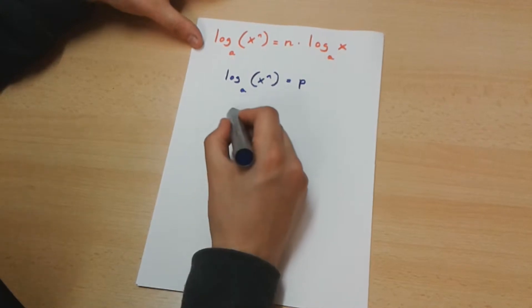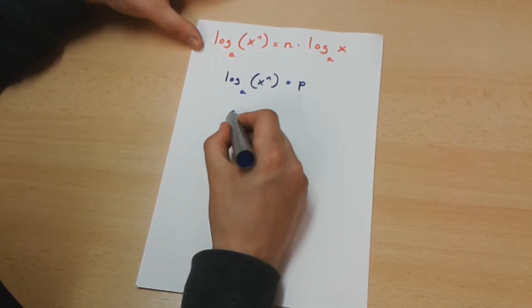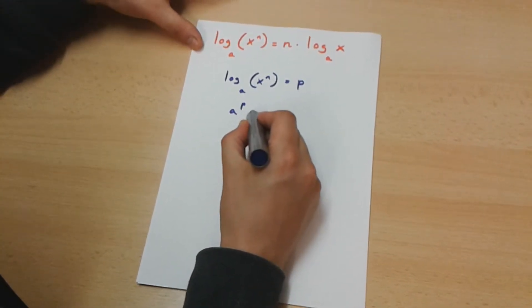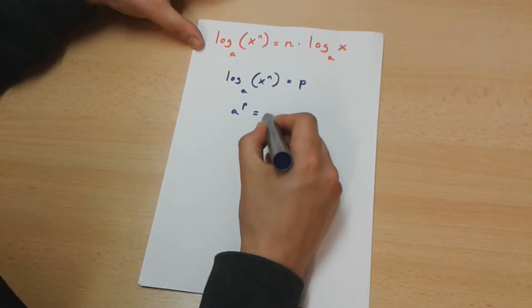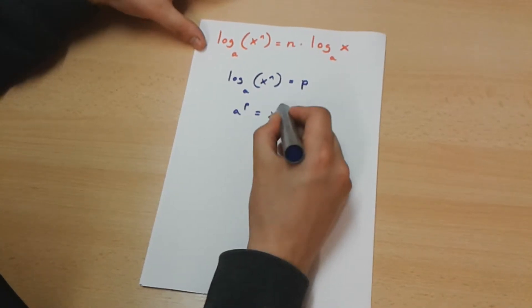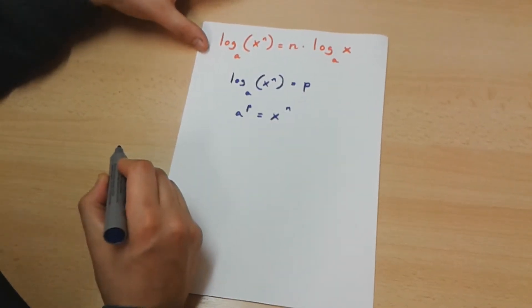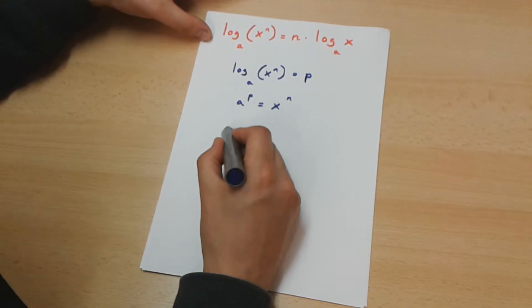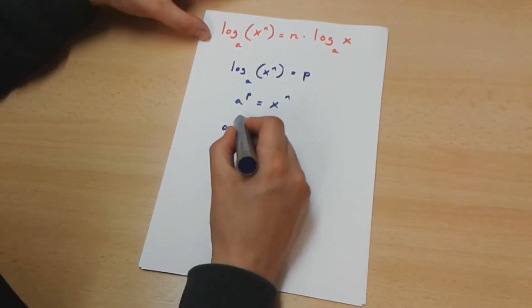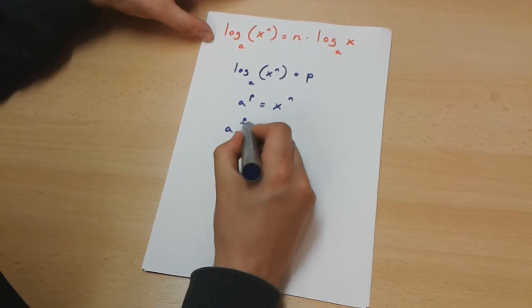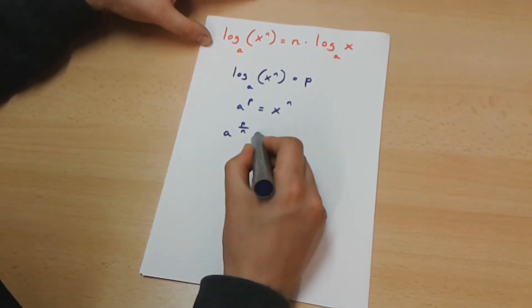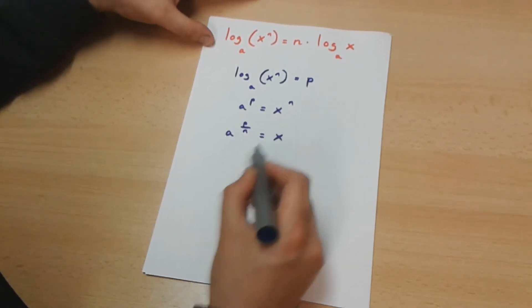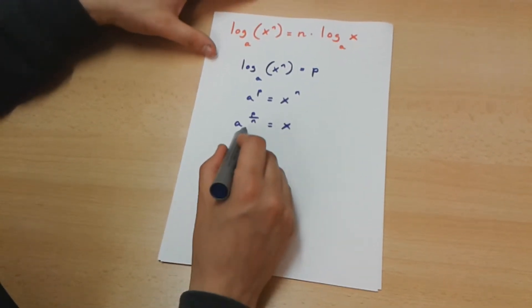If this is the case, a to the power of p is equal to x to the power of n. And if this is the case, a to the power of p over n is equal to x.